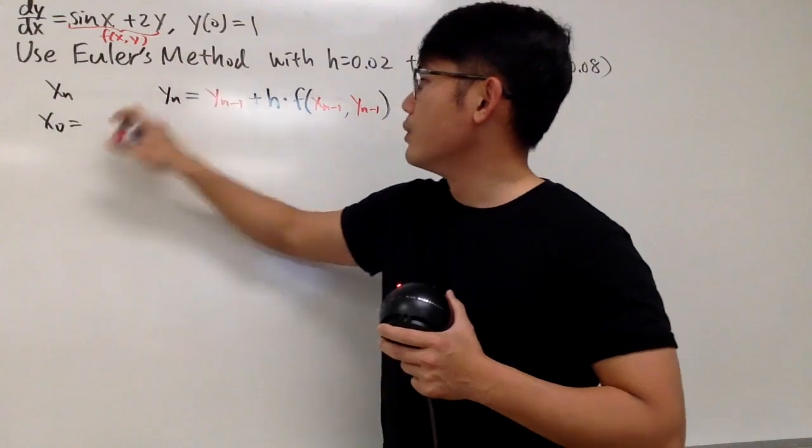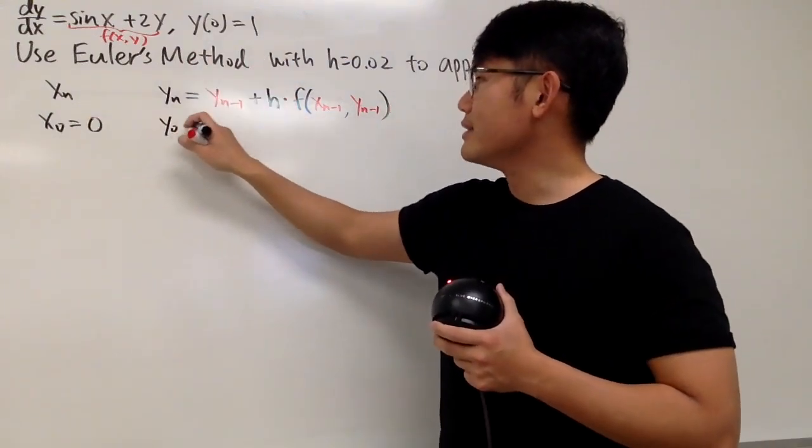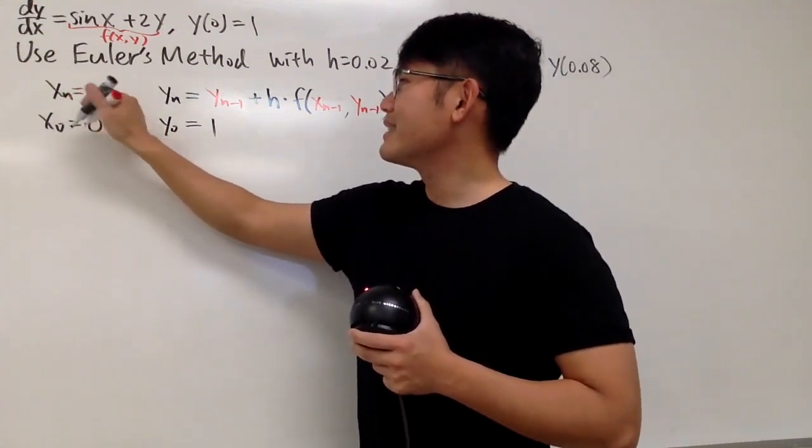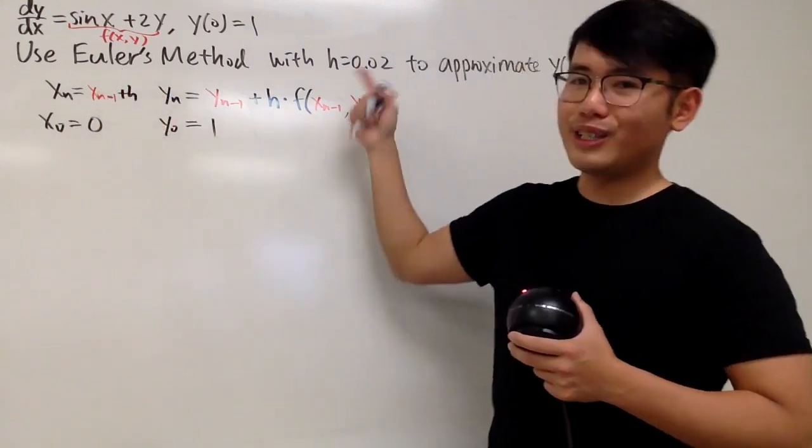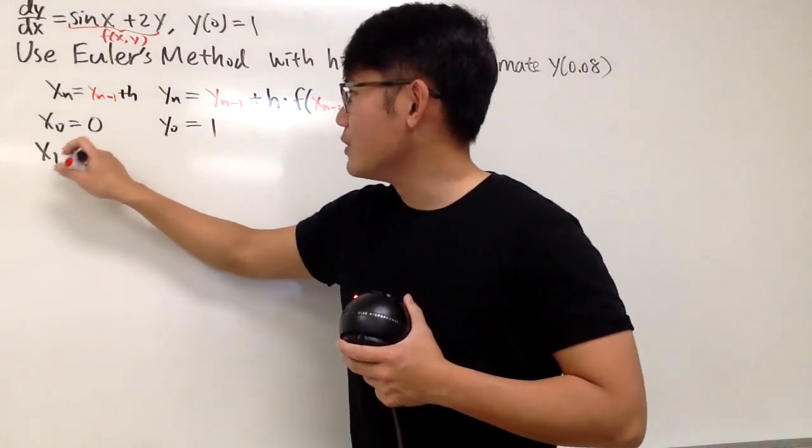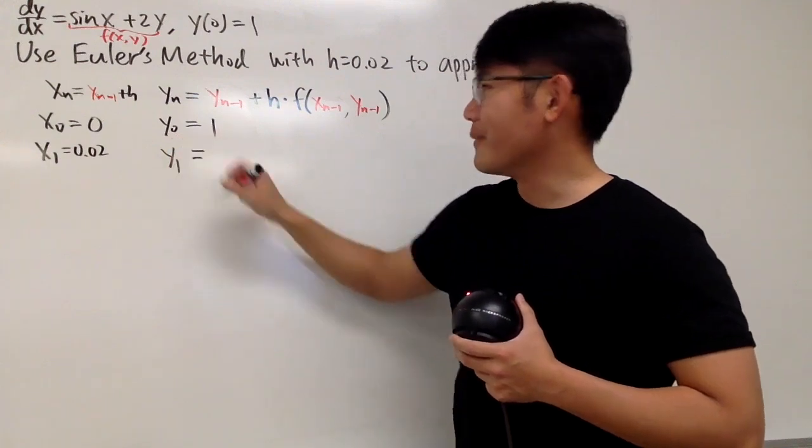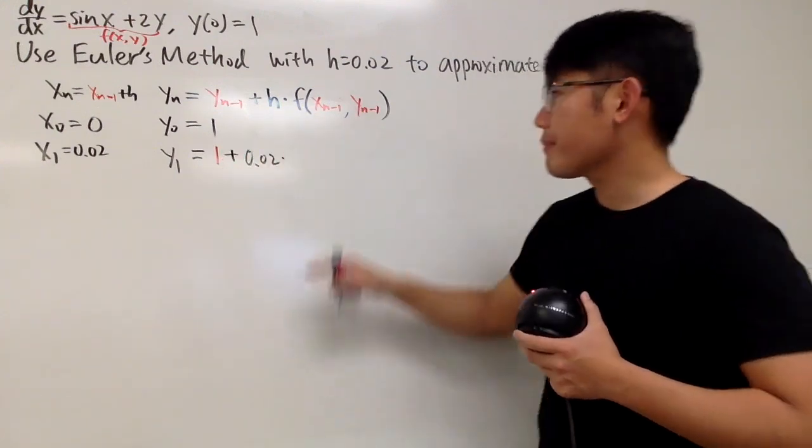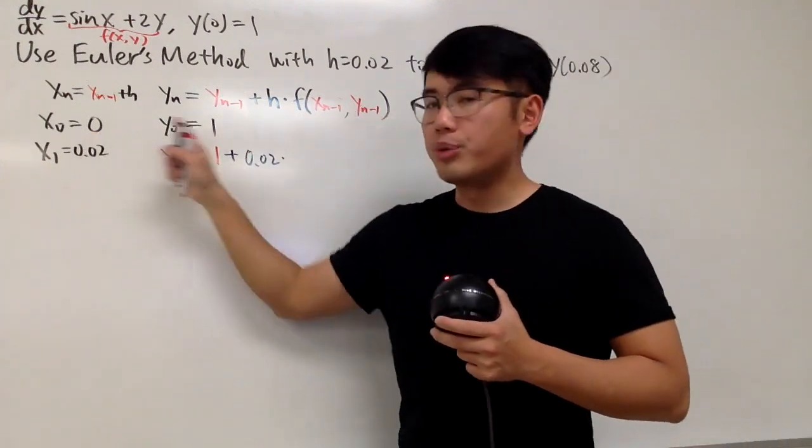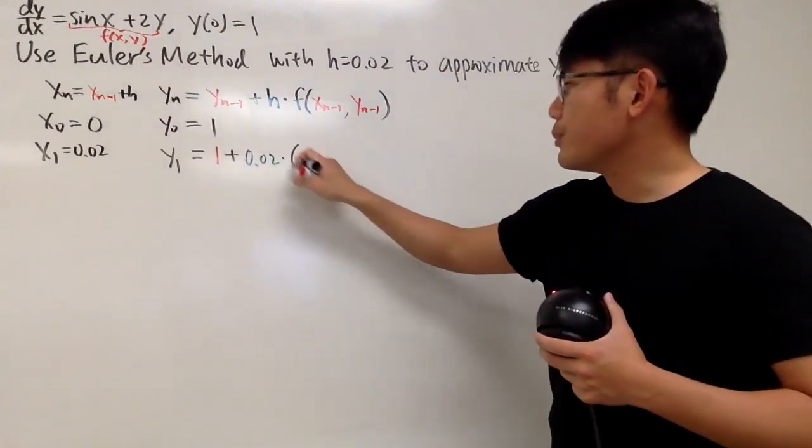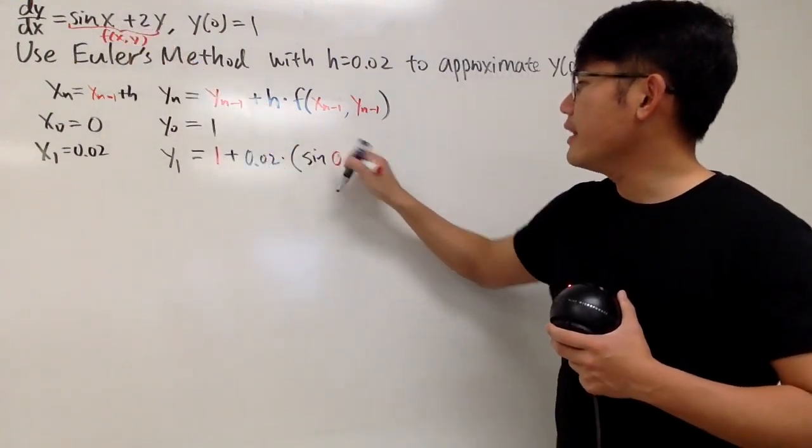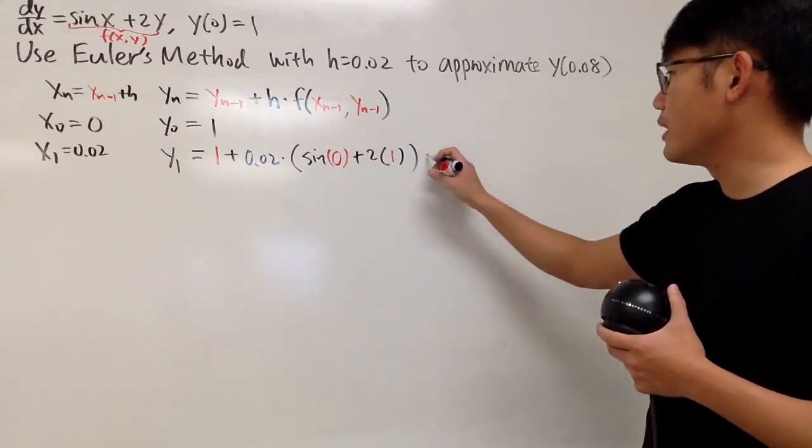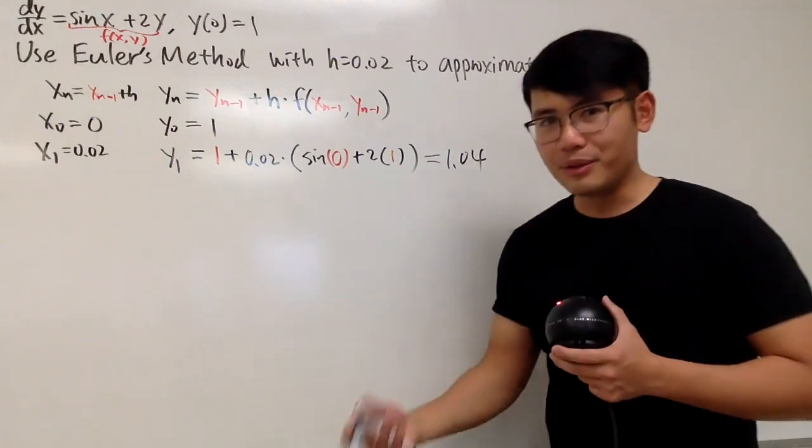Let me write down x0 equals 0, and then y0 equals 1. So that's our starting. And now, to get the next x value, you just go ahead and do xn-1 plus h. So you just keep adding 0.02. So the next one is x1, which is 0.02. All right, y1. You are going to look at the previous y value, which is 1, and then you add h is 0.02, and then you multiply by f of the previous x and y value. So you put 0 into sine, and then you add 2 times 1, like that. So that's the idea. Just use the calculator. So you get 1.04, and now you just continue the process.